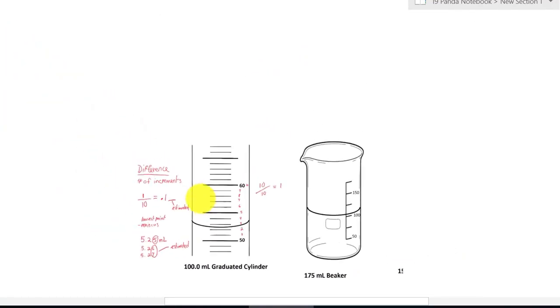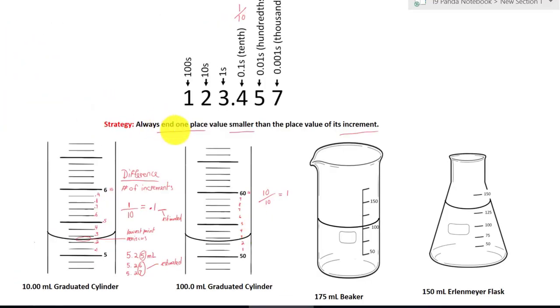Now let's go back to our strategy. Our strategy says that always end one place value smaller than the place value of its increment. This number will be the ones place. We need to estimate our number for the tenths.